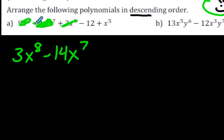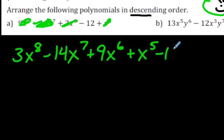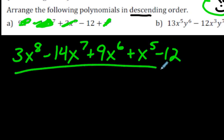And the next one is the 9x to the power of 6, or 9x exponent 6. So, that's a positive 9x exponent 6. Then we have x to the fifth right here. And lastly, we just have the constant, which is 12. We are done.